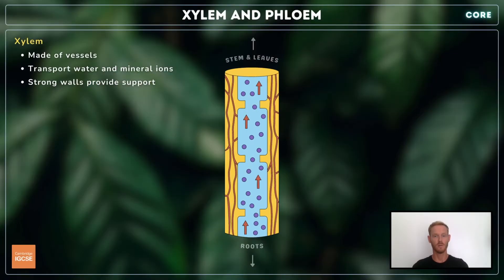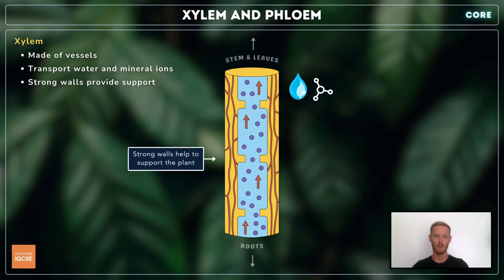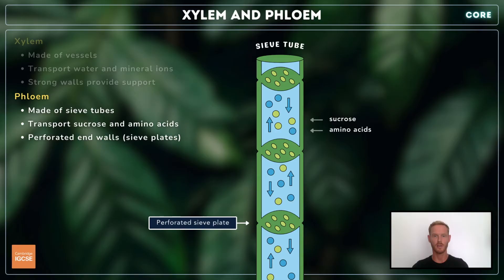Xylem vessels are responsible for transporting water and mineral ions, primarily from the roots to the stem and leaves. Their walls are very strong, so they also provide some support for the plant. Phloem vessels, known as sieve tubes, transport dissolved substances like sucrose and amino acids from the leaves to the rest of the plant. The cells of the phloem have perforations in their end walls that allow substances to pass from cell to cell.